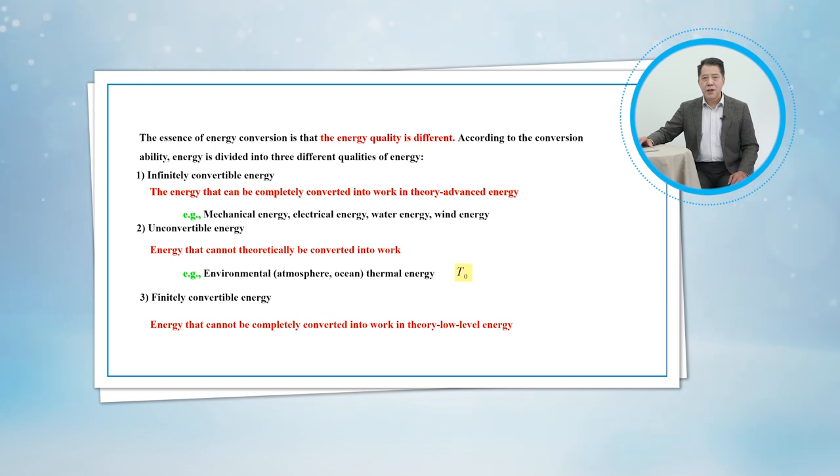Partially convertible energy: Energy that cannot be completely converted into work in theory, and this is low-level energy. Examples include thermal energy and thermodynamic energy with temperature different from T0.